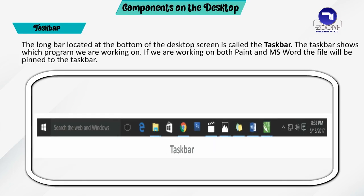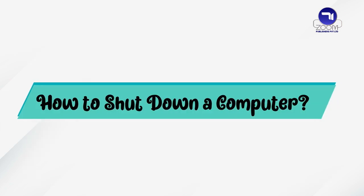The long bar located at the bottom of the desktop screen is called the taskbar. The taskbar shows which program we are working on. If we are working on both Paint and MS Word, the files will be pinned to the taskbar.